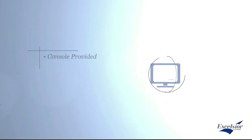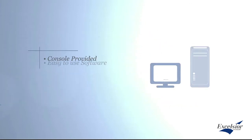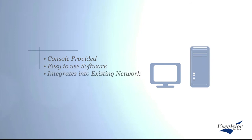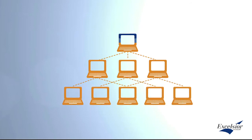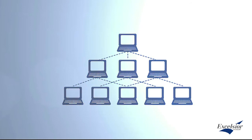The Excelsior comes with its own console and powerful, easy-to-use software that seamlessly integrates into your existing network without any specialized hardware. The Prexion 3D Viewer can be installed on any PC in the network, so any connected computer can access the images with no annual or additional licensing fees.